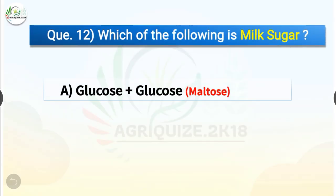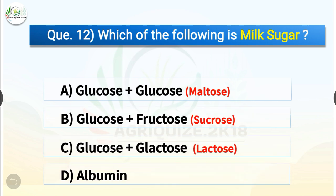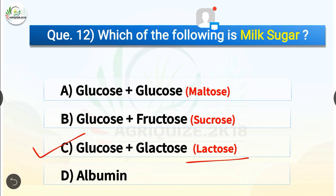Question number 12. Which of the following is milk sugar? The options are glucose plus glucose, glucose plus fructose, glucose plus galactose, or albumin. The correct answer is option C, glucose plus galactose. So glucose plus galactose — which is lactose — is the milk sugar, whereas glucose plus glucose is maltose and glucose plus fructose is sucrose.